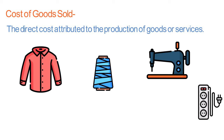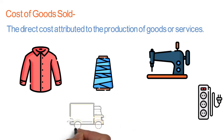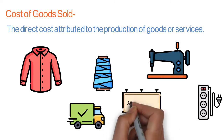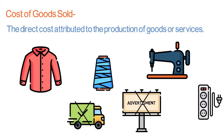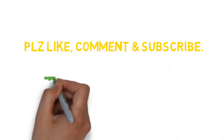All of these are direct costs, as they have been incurred in the making of the shirt. What we should not consider in cost of goods sold: transportation cost or any advertisement cost should not be included, because advertisement cost is not directly related to making the shirt. But buttons, thread, labor, and electricity are all directly related to the shirt, so we add all these to the cost of the shirt — and this is considered as cost of goods sold. Please like, comment and subscribe. Thank you.